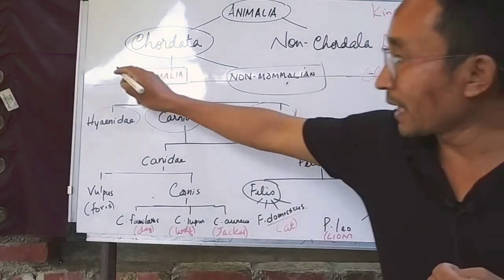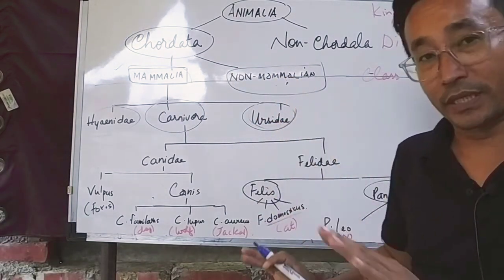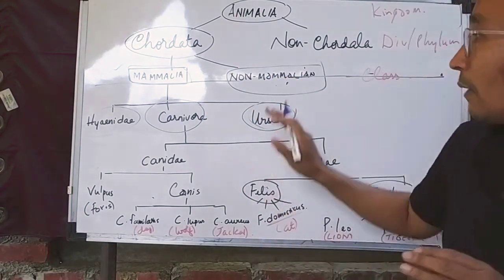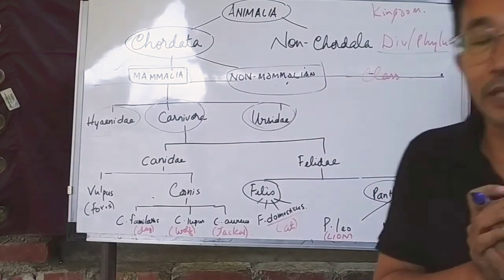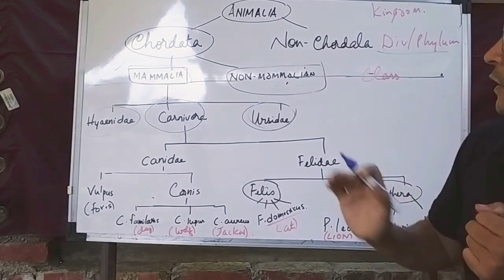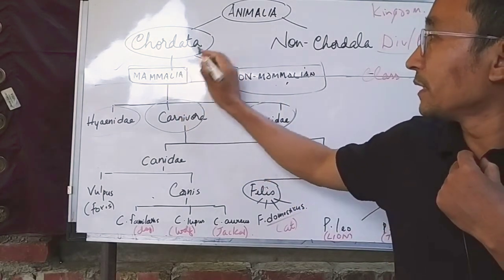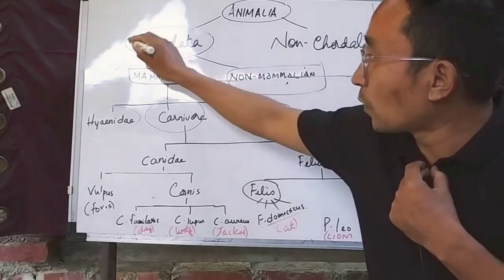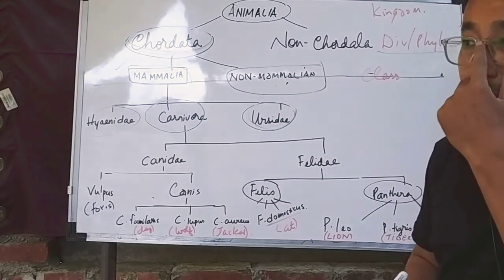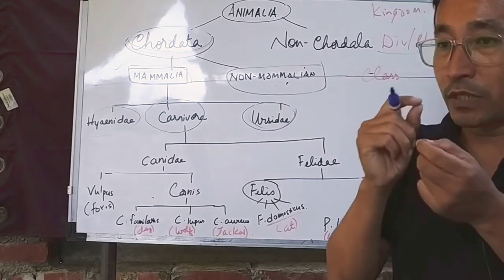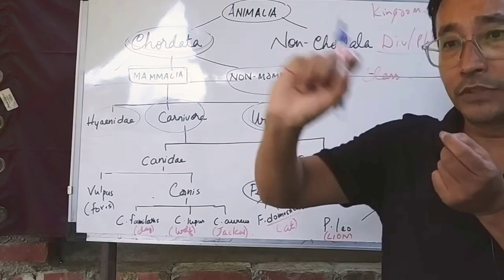There are different classes in mammals. A mammalian class is different from a non-mammalian class. The class can be divided into divisions — you can classify them as either quadrata or non-quadrata. You can also classify them by phylum divisions, or by the presence or absence of a spinal cord.